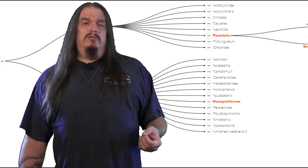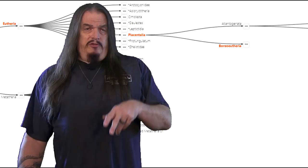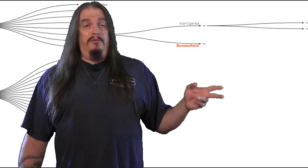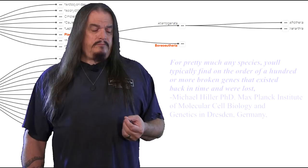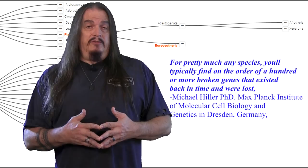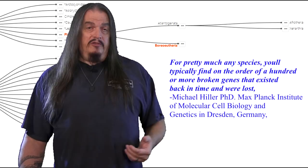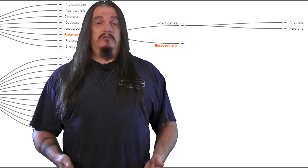So what happened to our sister group, Atlantogenata? Geneticists have determined that suspending testicles in a scrotum is actually an ancestral trait even in Afrotherians, but that their testicles don't drop anymore because of a genetic defect in their development, one that was inherited by both daughter branches of that clade. So their autapomorphy is that they're so poorly designed that all their descendants inherited the same defective genes. For pretty much any species, you'll typically find on the order of a hundred or more broken genes that existed back then and were subsequently lost. These are called molecular fossils, just one more line of evidence or facts that only make sense within the context of evolutionary theory.